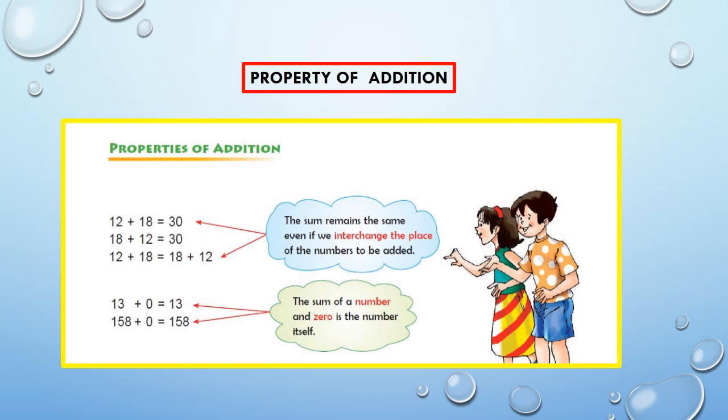Number 2: The sum of a number and 0 is the number itself. For example, 13 plus 0 is equal to 13. And 158 plus 0 is equal to 158.